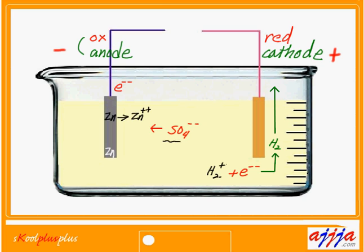We are using the same sulfate, but we're going to use zinc sulfate instead of hydrogen sulfate (sulfuric acid). We're going to have the same spectator. Zinc plus sulfuric acid — zinc is a regular atom, a metal, so this one is solid. Hydrogen cation is aqueous, which is in solution. The sulfate is an anion, also aqueous.